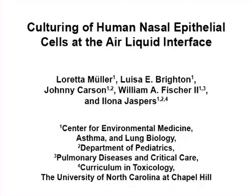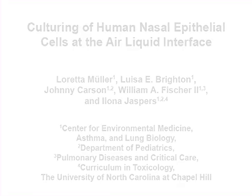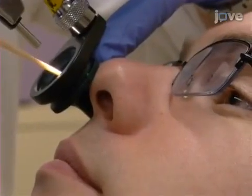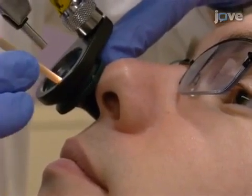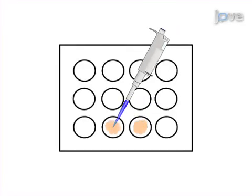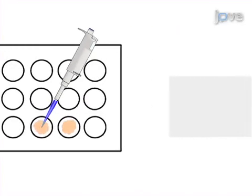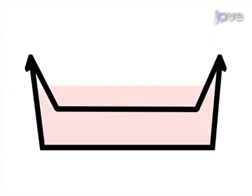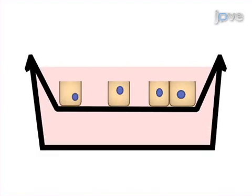The overall goal of this procedure is to culture redifferentiated nasal epithelial cells at the air-liquid interface. This is accomplished by first obtaining superficial nasal epithelial cells from a human volunteer. The second step is to seed the cells on tissue culture plates and then expand the cells in flasks. Next, the expanded cells are seeded into transwells and grown to confluency.